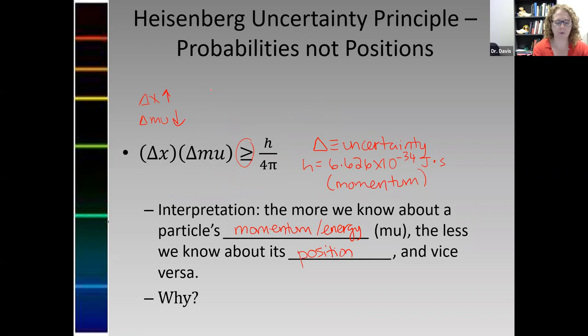Or the more certain I get about position, the uncertainty goes down, the less I know about momentum. They're on a seesaw. If one goes up, the other must go down.